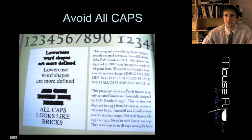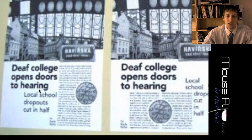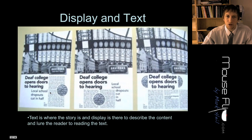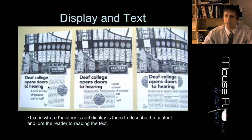Here are three examples: text is where the story is, display text describes the content and lures the reader to reading the text. These are just different ways of putting text in parts, and you want to think about this when you do your lyrics because your lyrics are going to look something like this with more text. So you've got to think about how you're going to lay out your lyrics along with your content and photos.